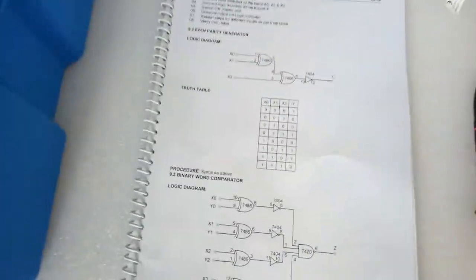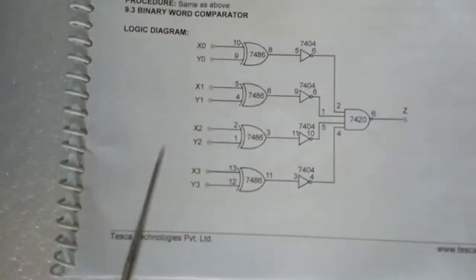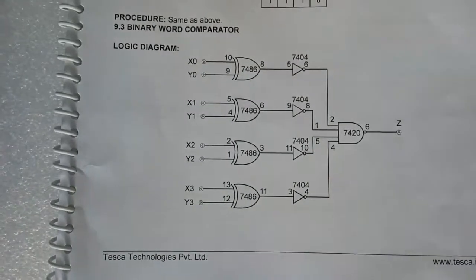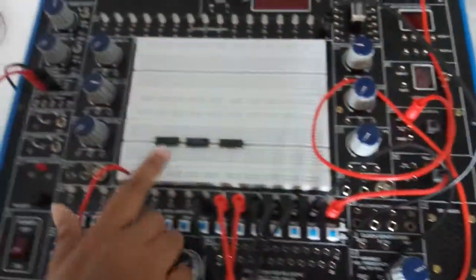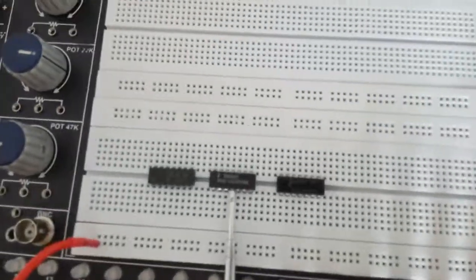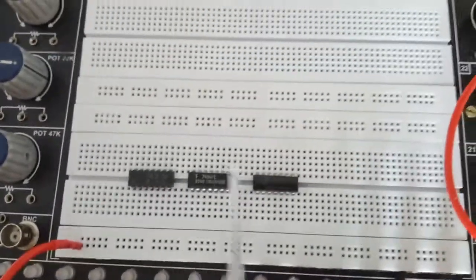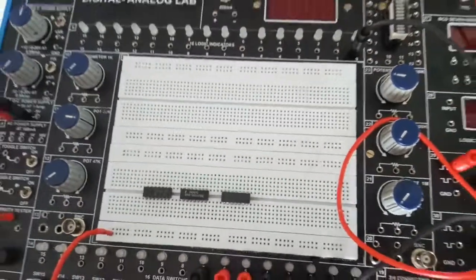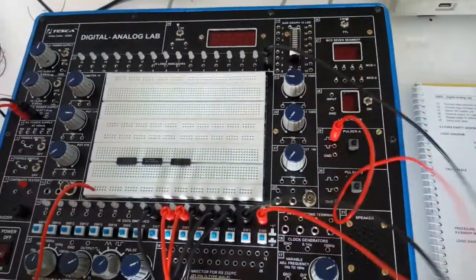The next experiment is the application of XOR gate as a binary word comparator. For this we will build this circuit diagram. We will need IC 7486, IC 7404, and IC 7420. First we will give the input.